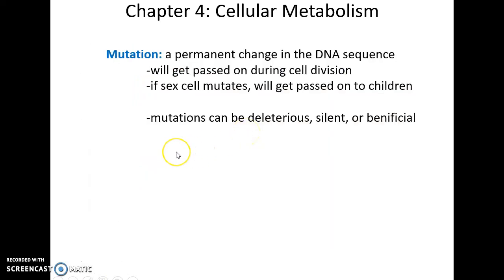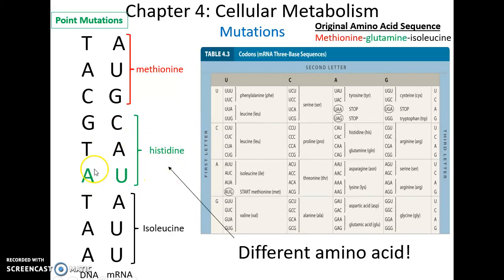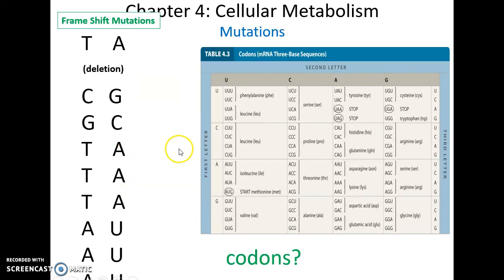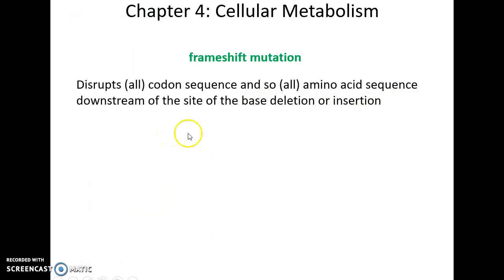Mutations are permanent changes to DNA that can be passed on. If serious, they can cause major problems; if beneficial, they can be a great thing. Point mutations occur when one single nucleotide is changed — this may only change one amino acid, or it could be a silent mutation with no actual change. Frameshift mutations occur when you lose a nucleotide, changing all the amino acids after the mutation point — that's a very serious problem.